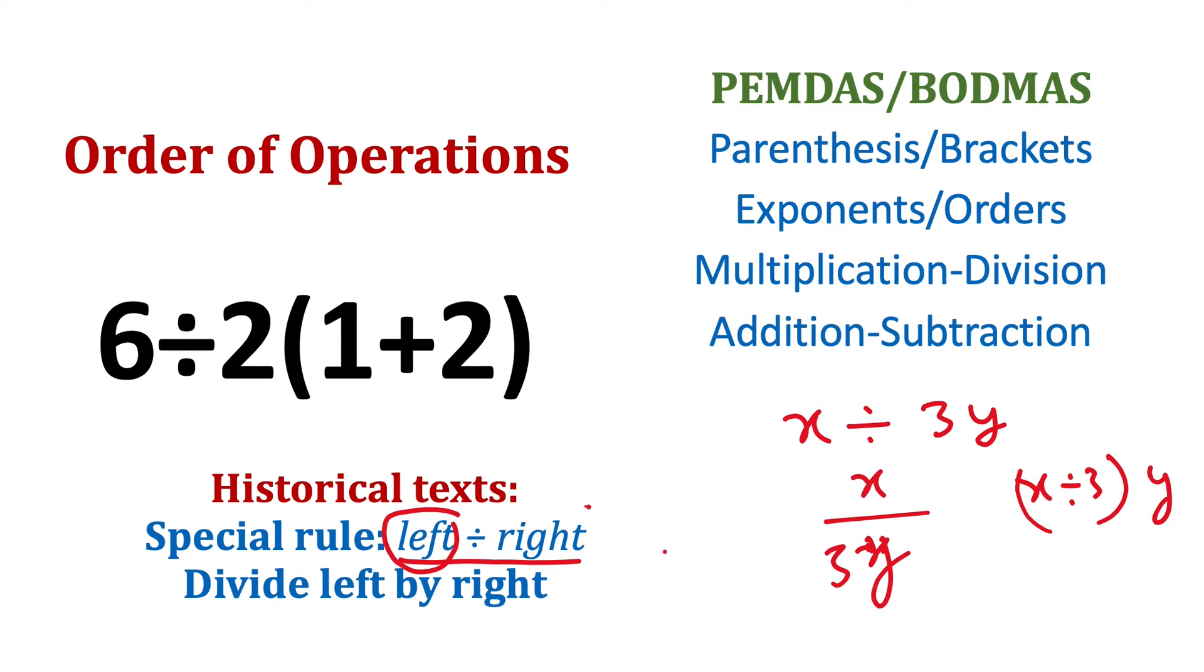So in historical texts, it used to be written like this in one line in order to save space. But now we explicitly write braces whenever we mean that. So if you mean this, you should write x÷3y in order to avoid ambiguity. Otherwise, modern calculators will evaluate this using the order of operations defined by this BODMAS rule.